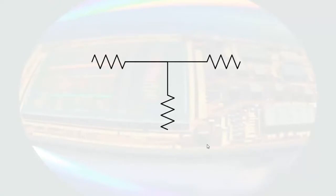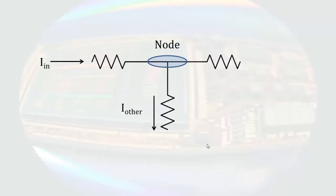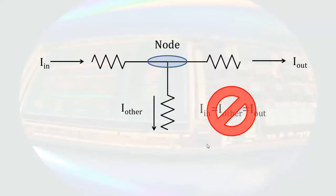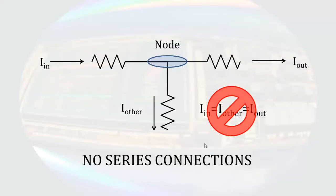Here is an example of resistors connected so that they share one node. However, these resistors are not in series because if current enters the left-hand resistor, some of it will go down through the bottom resistor and some will go through the right-hand resistor. This means the currents through the resistors are not equal, so there are no series connections in this arrangement.